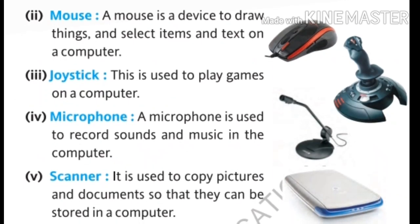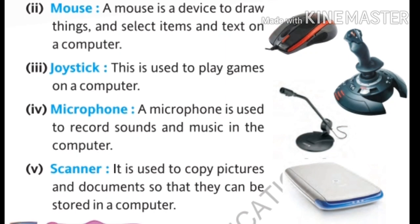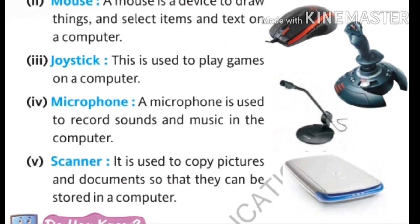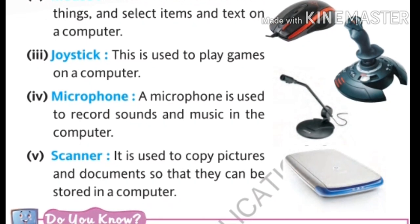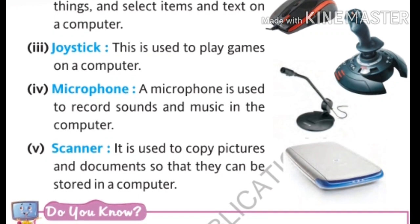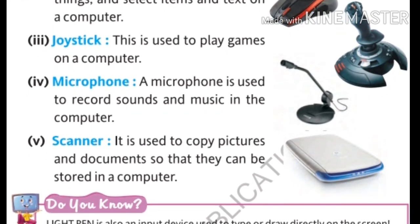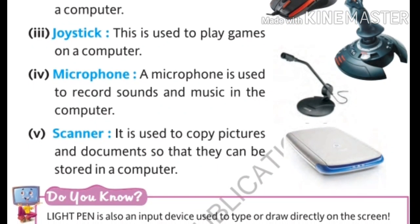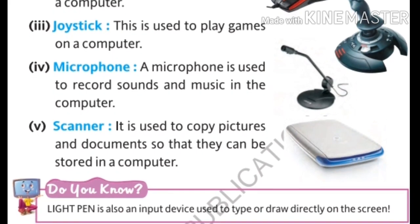The next input device is the mouse. A mouse is a device used to draw things and select items and text on a computer. The next input device is the joystick. A joystick is used to play games on a computer and is also an input device.